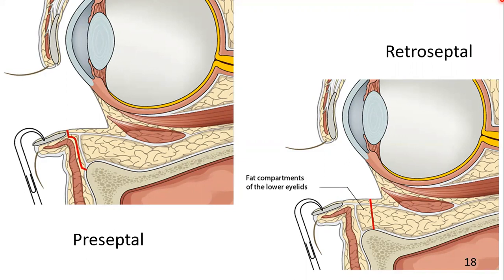The retroseptal route enters directly into the fat compartment of the lower eyelid. Therefore, periorbital fat may be encountered during the retroseptal approach, but this is of little concern and causes no ill effects. Controversy exists on the advantages and disadvantages of these two surgical routes. We recommend retroseptal because it is more direct and easier to perform.